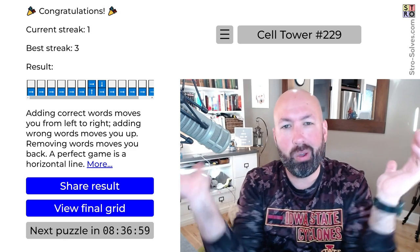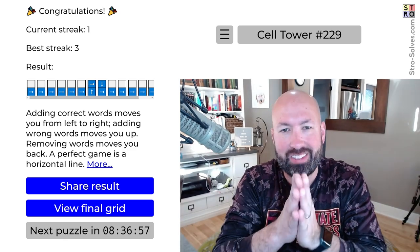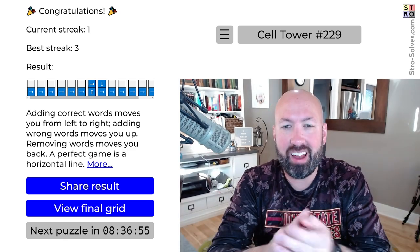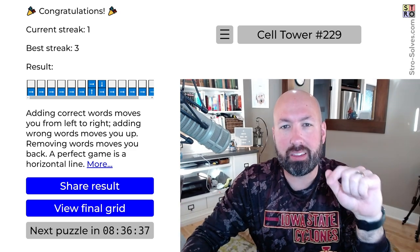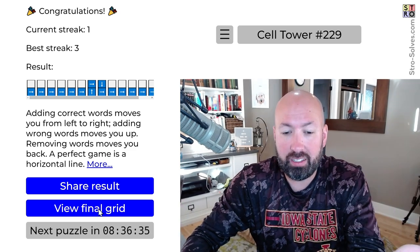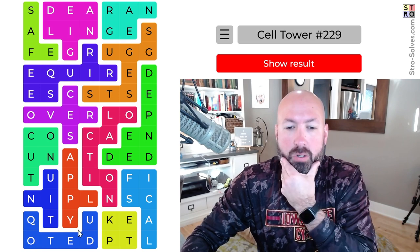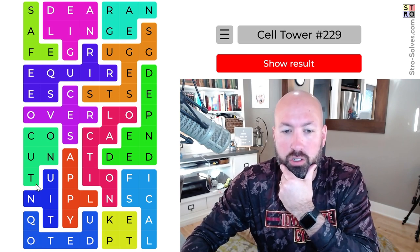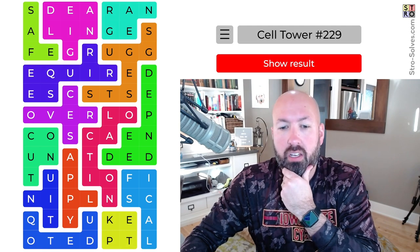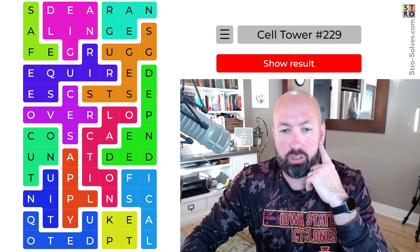All right, there we go. So one little mistake, and it shouldn't have been a mistake. I should have seen that. But that's all right. Not too bad. That Q at the bottom with seemingly no U was a good clue to where you needed to start. So, yeah, always look for those unusual letters, especially a Q, because there's just not very many options for those usually.